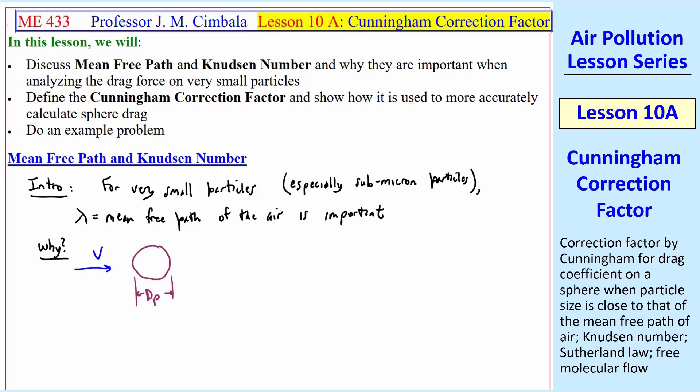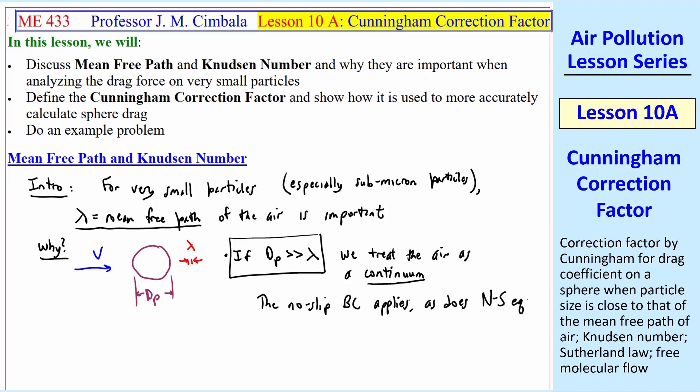p stands for particle, and this particle is in a flow of air. If dp is much greater than the mean free path lambda, suppose lambda is very small compared to dp, we treat the air as a continuum, which means we don't have to consider individual air molecules. The no-slip boundary condition applies then, as does the Navier-Stokes equation, with standard definitions of viscosity, density, etc.